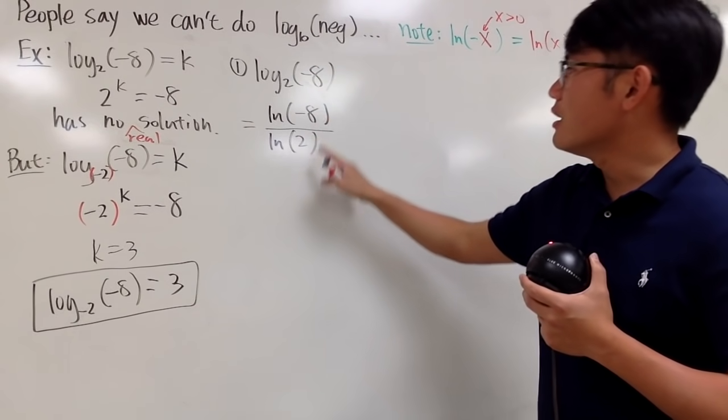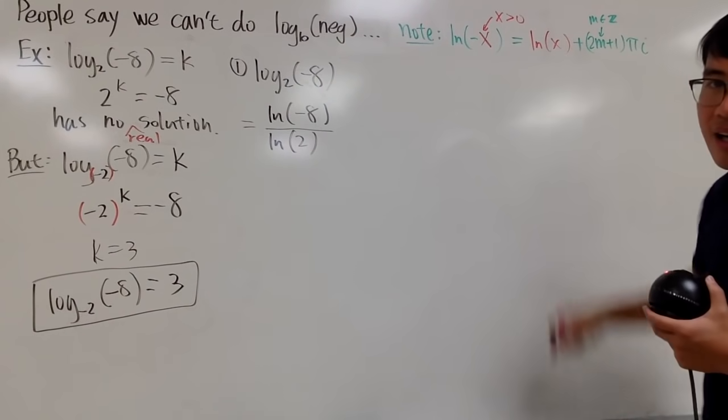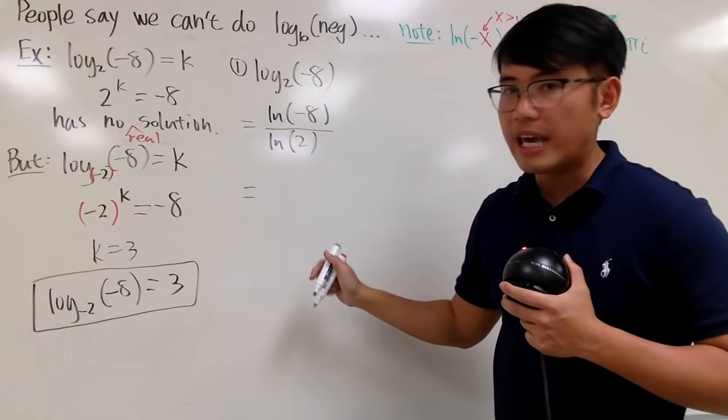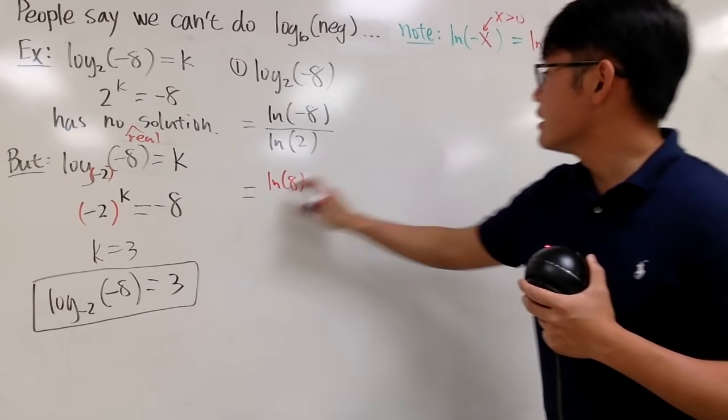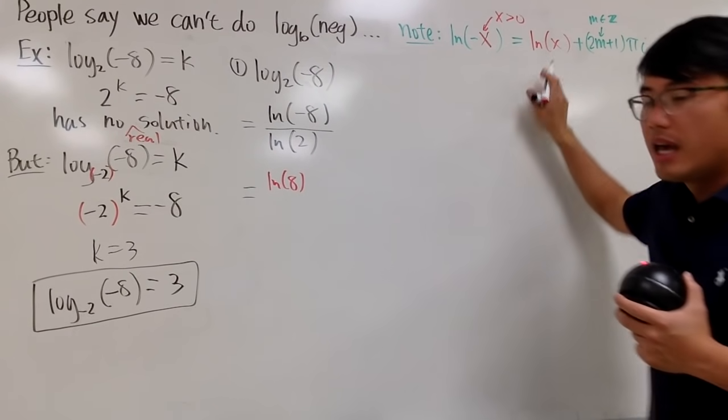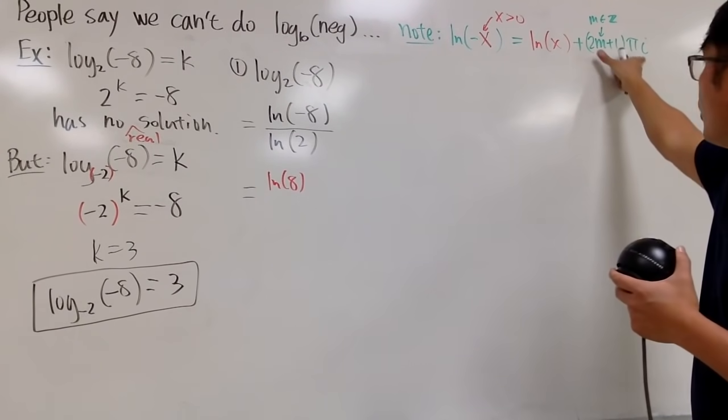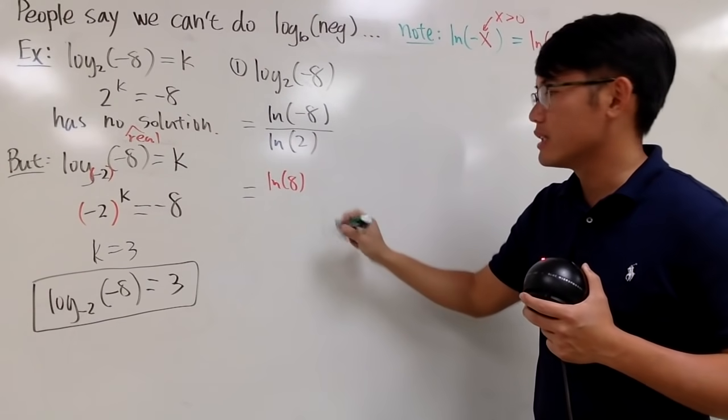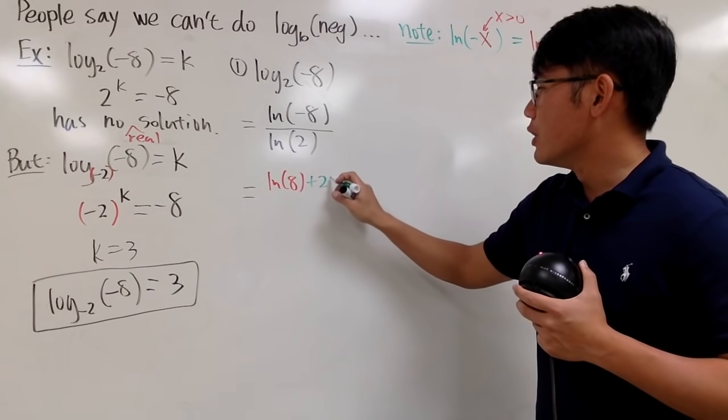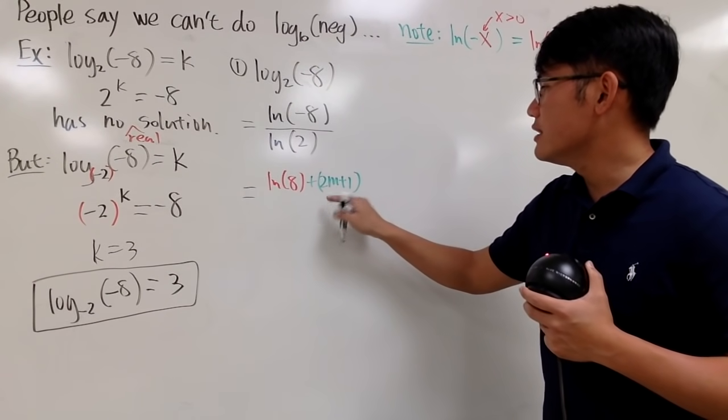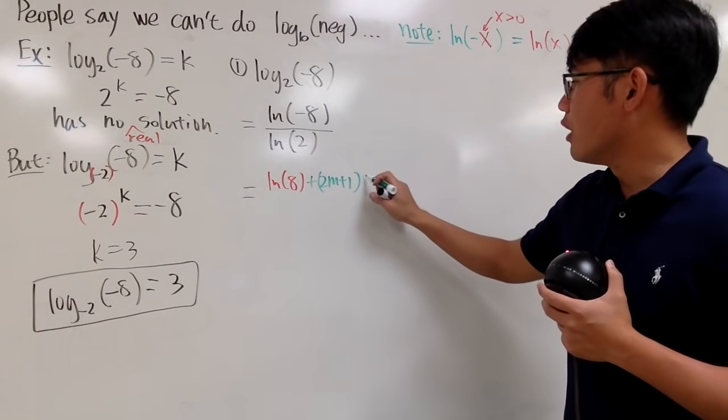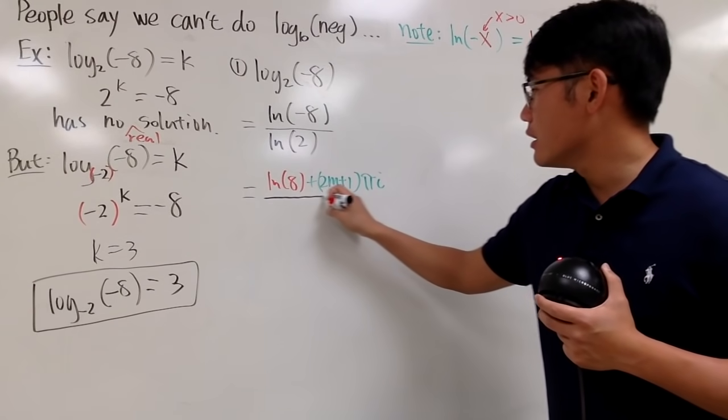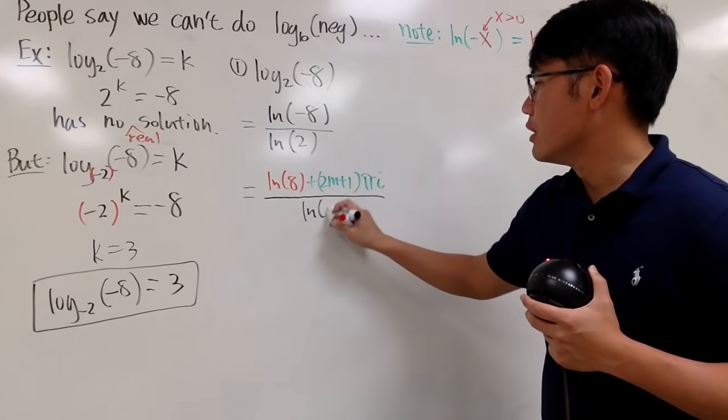On the top here, this is where we have to use this formula. And of course, 8 is the x. So, we are going to get ln of 8. That's the first part. And then, let me just write down all the values. So, I just put down 2m plus 1 times pi i for the other part. So, I write down plus 2m plus 1. And this is just an odd multiple of pi i. And then, we have to divide this by ln of 2. Like this. And that's pretty much the idea.